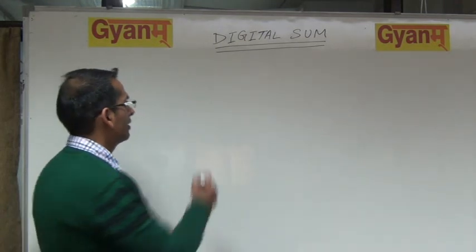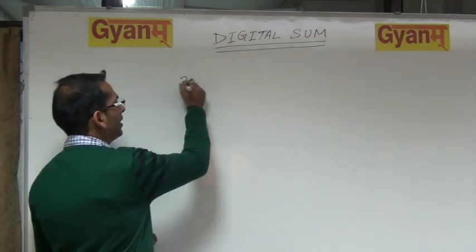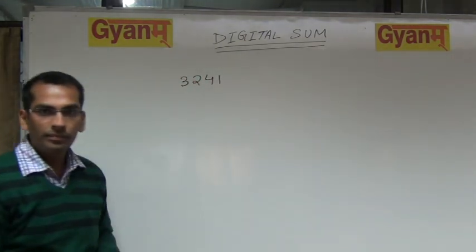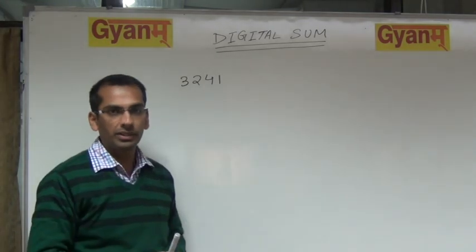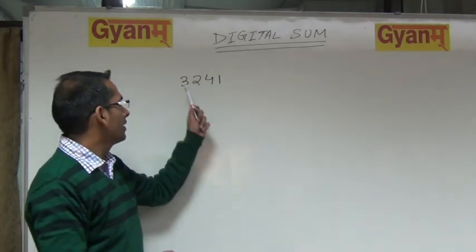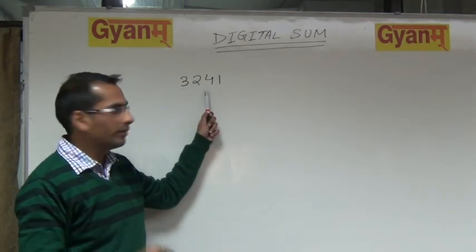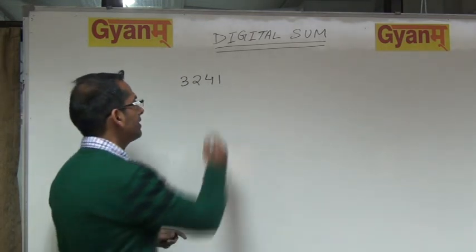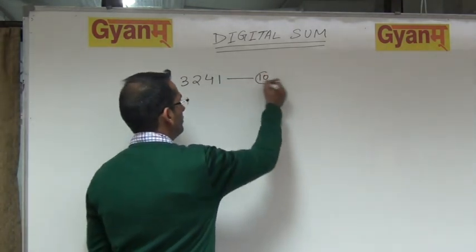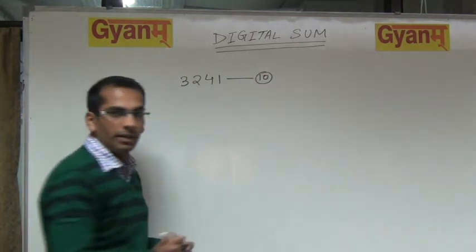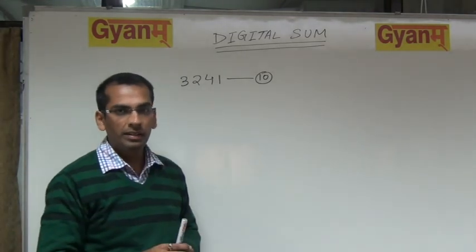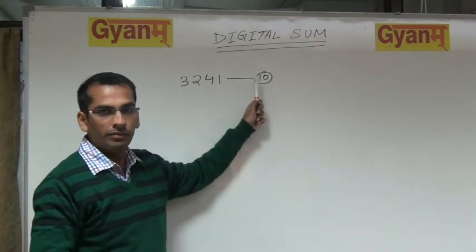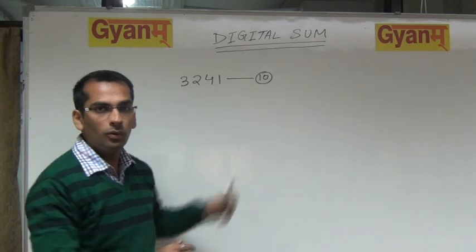For example, consider the number 3, 2, 4, 1. Let us find the digital sum of this number. What is 3 plus 2? 5. What is 5 plus 4? 9. What is 9 plus 1? 10. It has not become a single digit yet, so you add 1 and 0 again. What is 1 plus 0? 1.